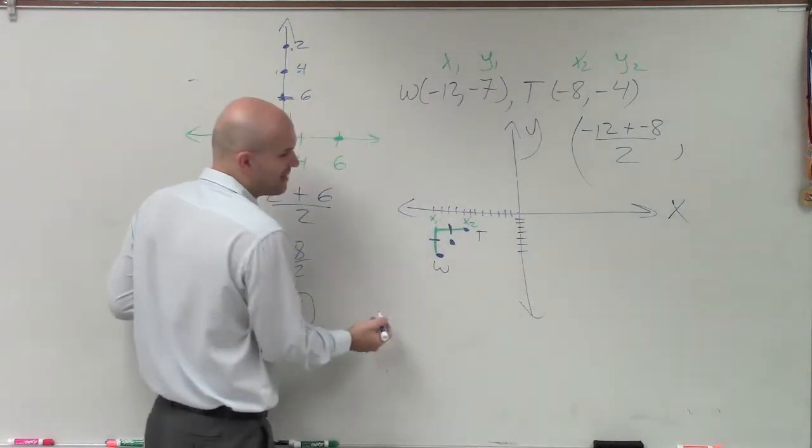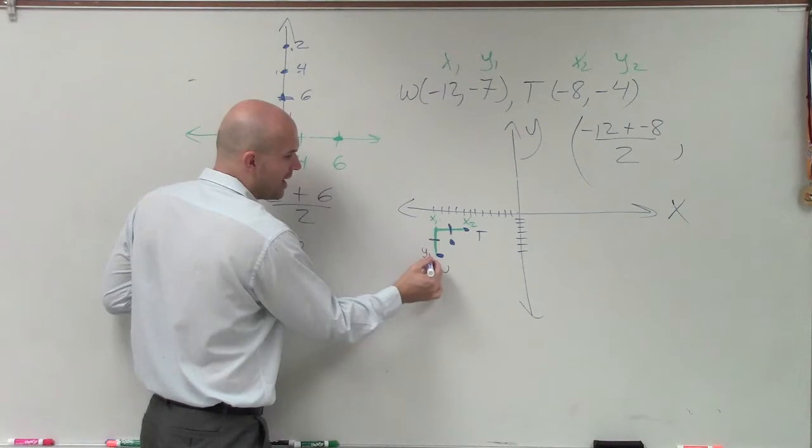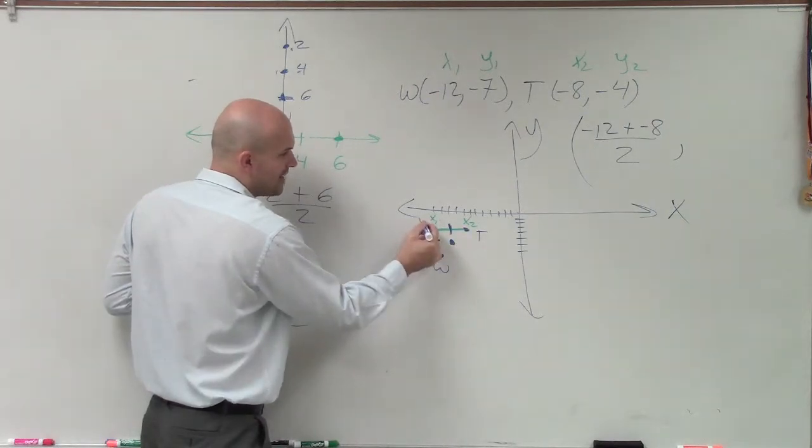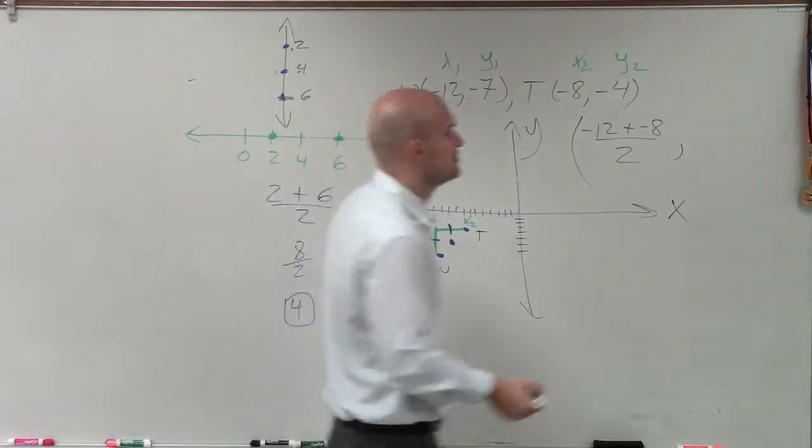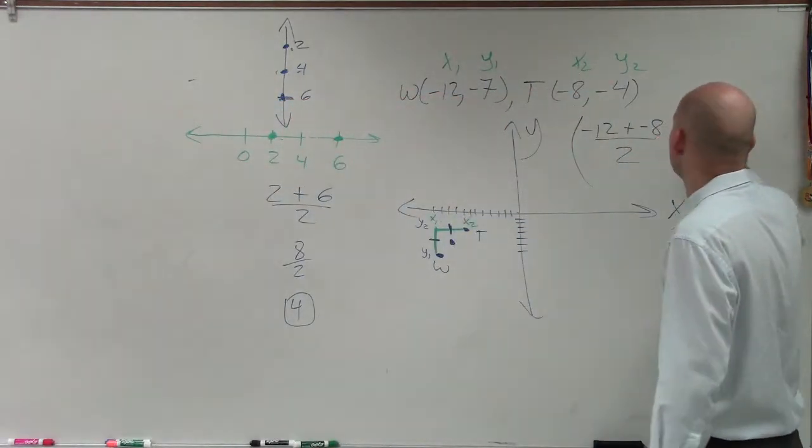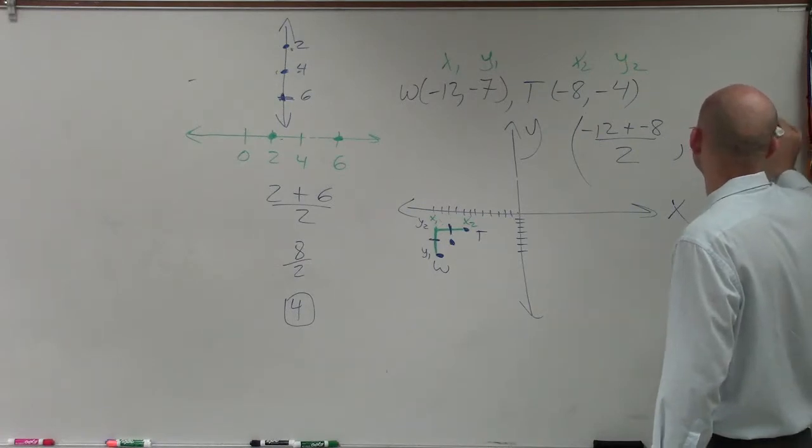So therefore, if my W was my x1, my W here is still going to be my y1, and my T will be my y2. So now I want to find the average between y1 and y2, which will be negative 7 plus negative 4 divided by 2.